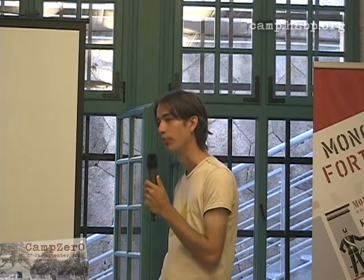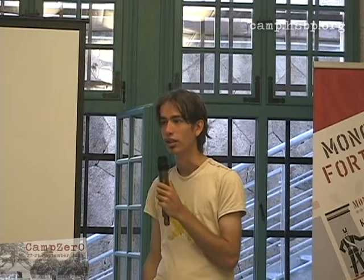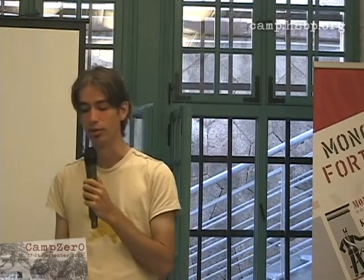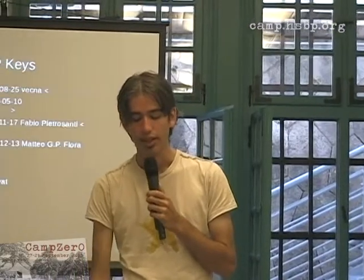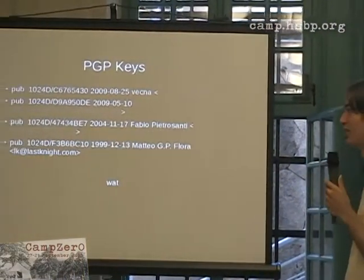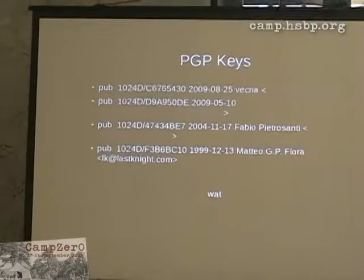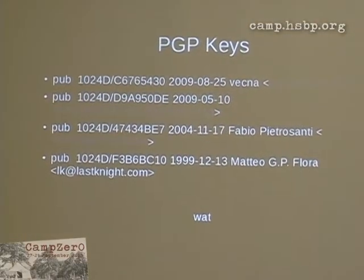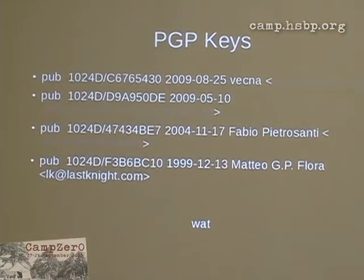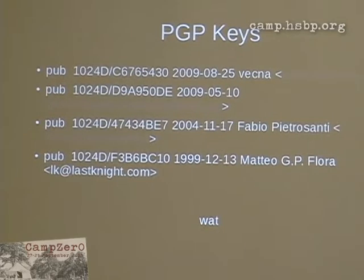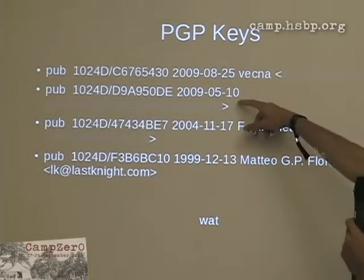Some developers of GlobaLeaks have really weak RSA keys — like 1024-bit. Maybe it's time to actually upgrade some keys to 4096-bit keys, or ECC.